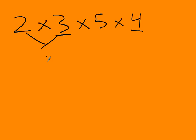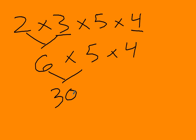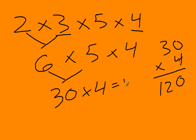So 2 times 3 is 6, times 5, times 4. 6 times 5 is 30, times 4. And guess what? 30 times 4 was the one we just did. 4 times 0 is 0. 4 times 3 is 12. 120.